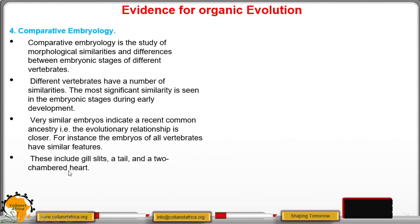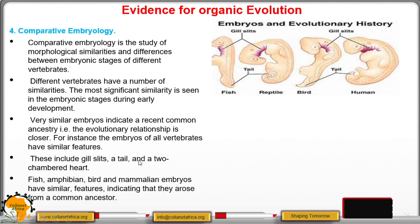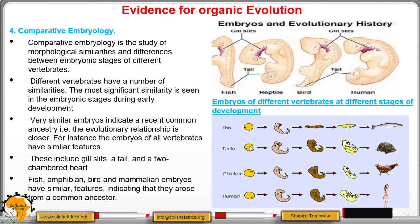A two-chambered heart indicates that circulation is single — blood flows only once to the heart in every complete circulation. Those organisms with double circulation have blood flowing twice to the heart per complete circulation. You can see fish, reptiles, birds, and humans all have a tail and gill slits, meaning they have a common ancestor. Looking at these embryos at different early stages of development, they proceed until they become fully developed.